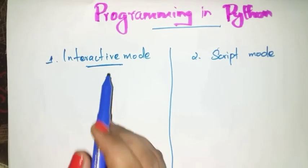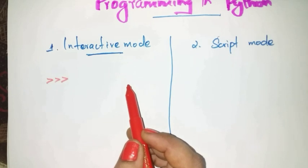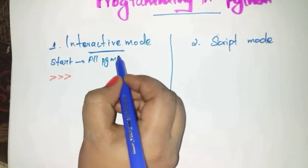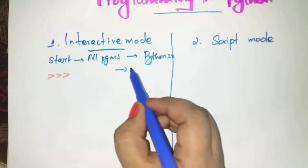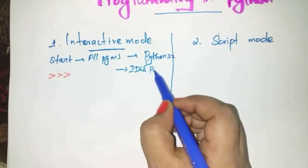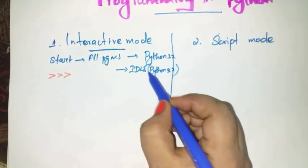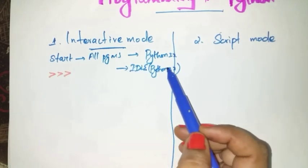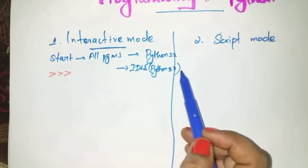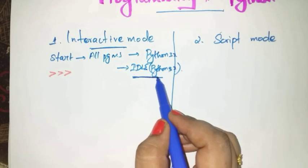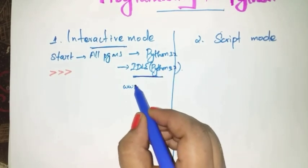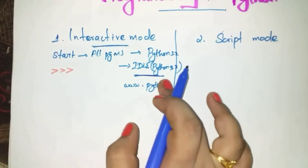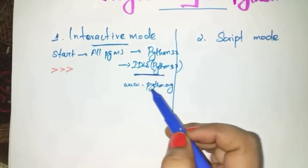First, let us see about interactive mode. How will you start this interactive mode? Click Start, All Programs, Python 3.x, and select IDLE Python 3.x version. You can download this IDLE Python 3.x version from the website www.python.org.